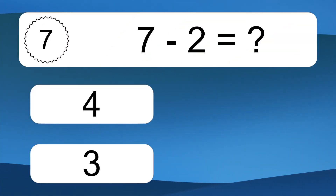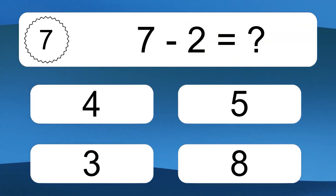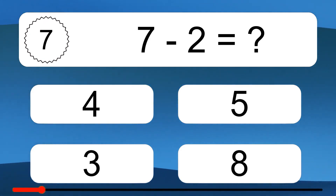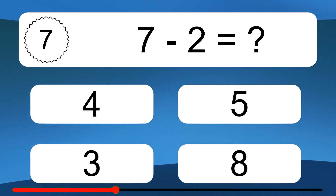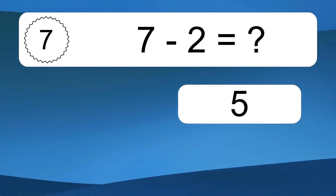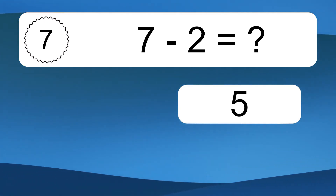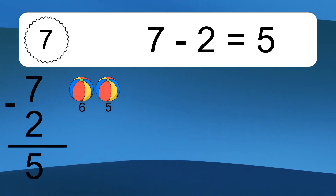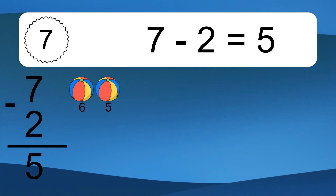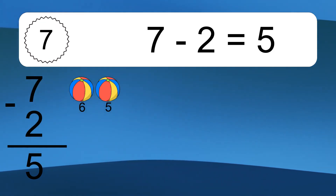7 minus 2 equals what? 7 minus 2 equals 5. Let's count it: 6, 5.